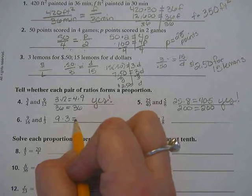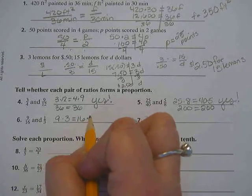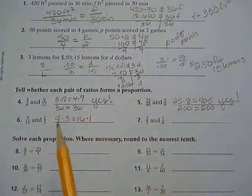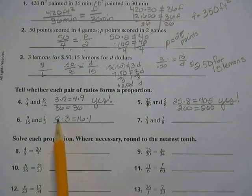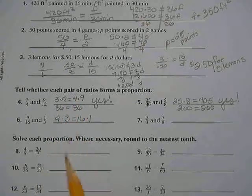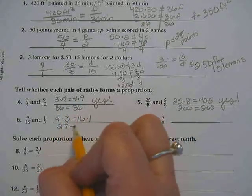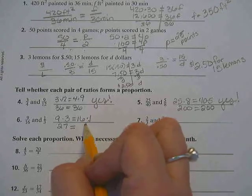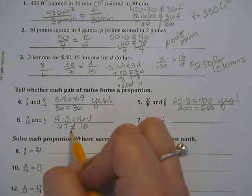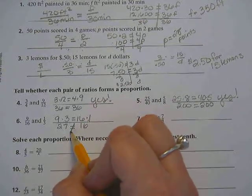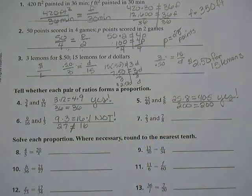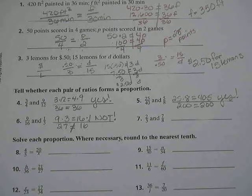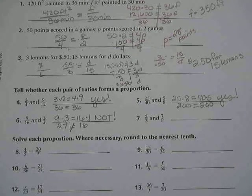Alright, let's check number 6. 9 times 3. Does that equal 16 times 1? Now guys, notice, you could put 9 times 3 first, or you could put 16 times 1 first. It doesn't matter. But 9 times 3 is? 27. 16 times 1 is? 16. So they do not equal each other. Put a little line through equal sign. This is not a proportion.